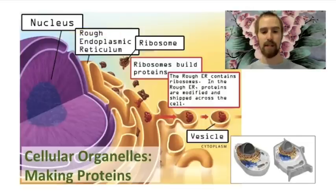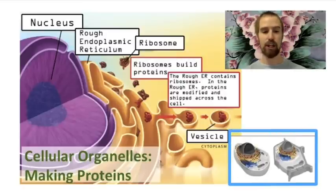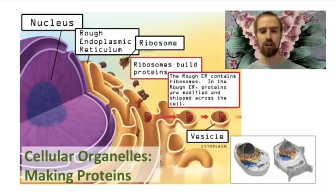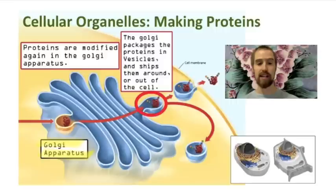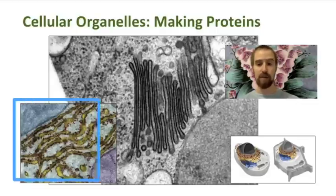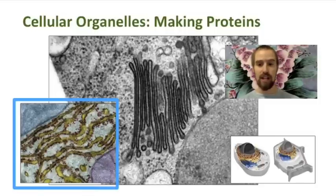Ribosomes manufacture polypeptides, the beginning of a protein molecule, and they do this job inside the endoplasmic reticulum. Once these polypeptides have been manufactured, they are packaged into small membrane-bound structures called vesicles, in which they can be shipped across the cell to another complex system of membranes called the Golgi apparatus. Polypeptides are further modified in the Golgi, and once a finished protein has been constructed, the Golgi packages these proteins into another vesicle and ships them where they need to go, either somewhere in the cell or possibly out of the cell to some other place in the body. Here we see some electron micrographs of the endoplasmic reticulum and the Golgi apparatus. In this image of the ER, which has been colorized, we can see not only the highly folded membrane that makes up the ER in green, but we can also see the ribosomes that give the ER its rough appearance in red.